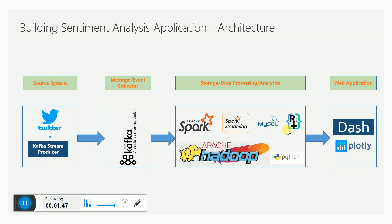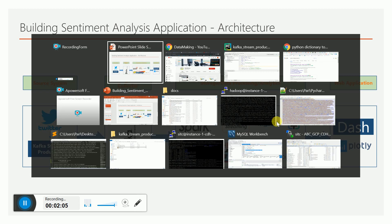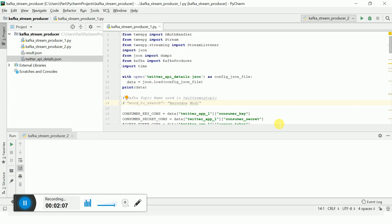When the dashboard refreshes, there will be a REST API call which gets the results from MySQL. This is the architecture. If you want more details about what is happening in each component, just refer to my previous architecture video. In this video I will be focused on how we actually developed this Kafka stream producer.